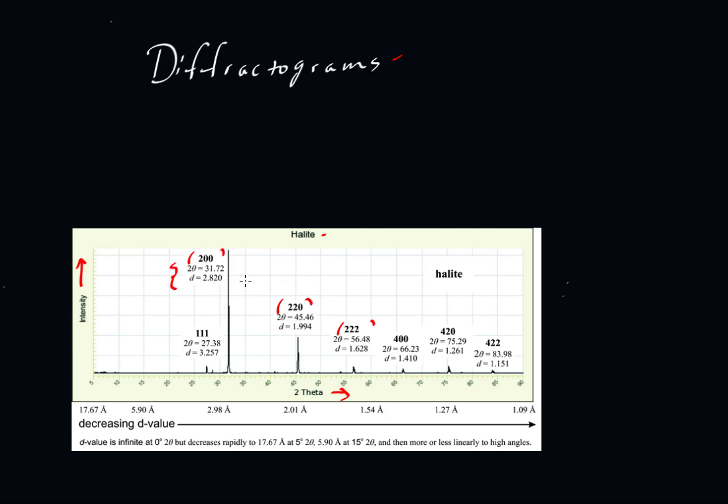For this video, I want to look at these values here. So here in this diagram, Dexter Perkins is showing the 2 theta value of 31.72. That's just read off directly from that diagram. So that's the position of this peak on this horizontal axis. Over here, this guy has a 2 theta of 45.46. Now he shows a d value of 2.820. So where does that come from?